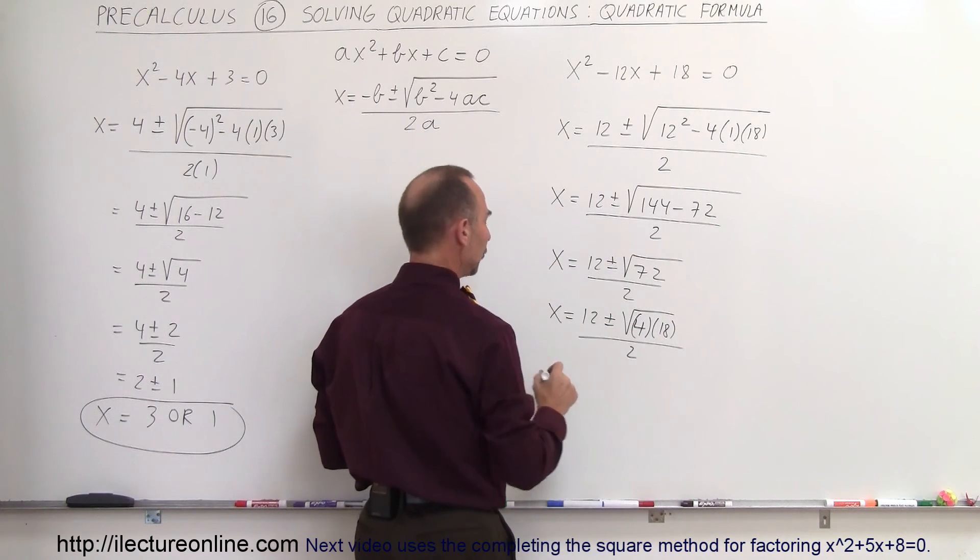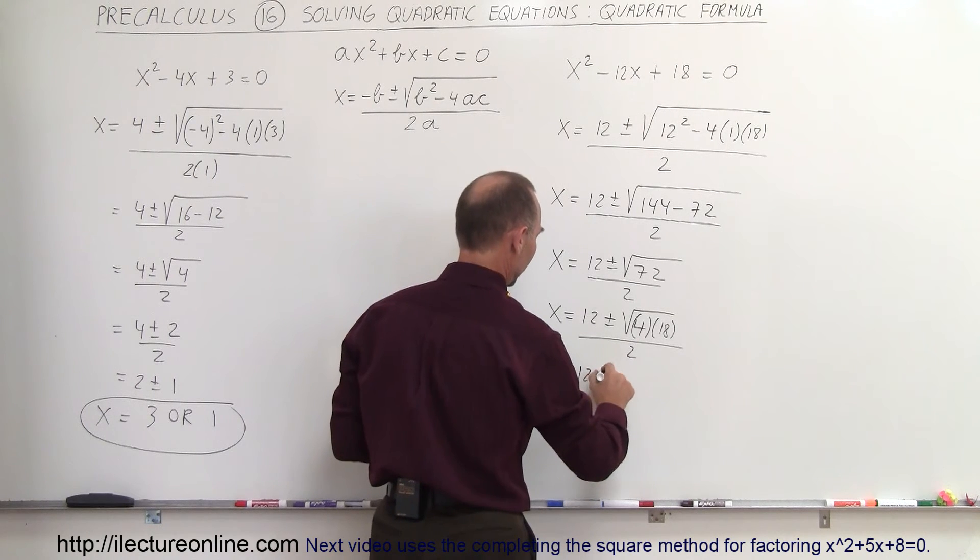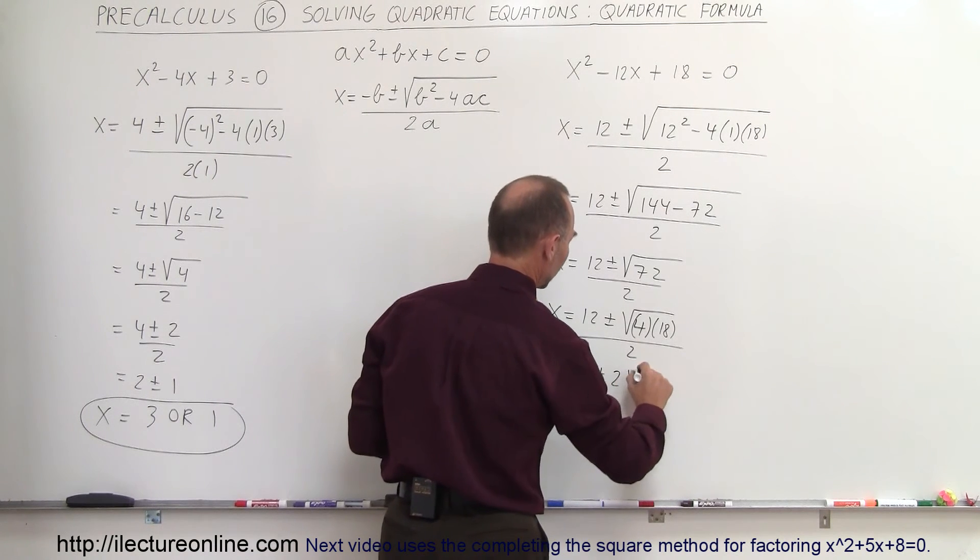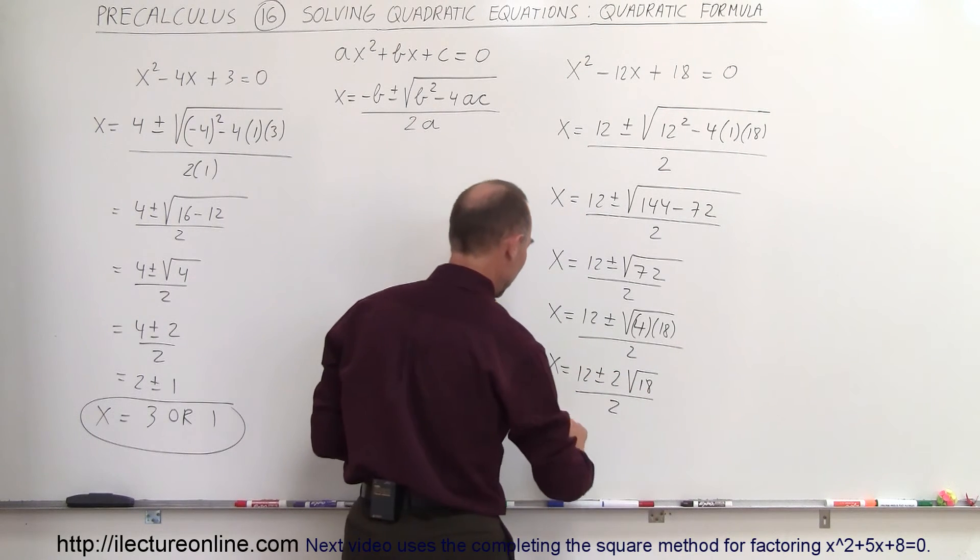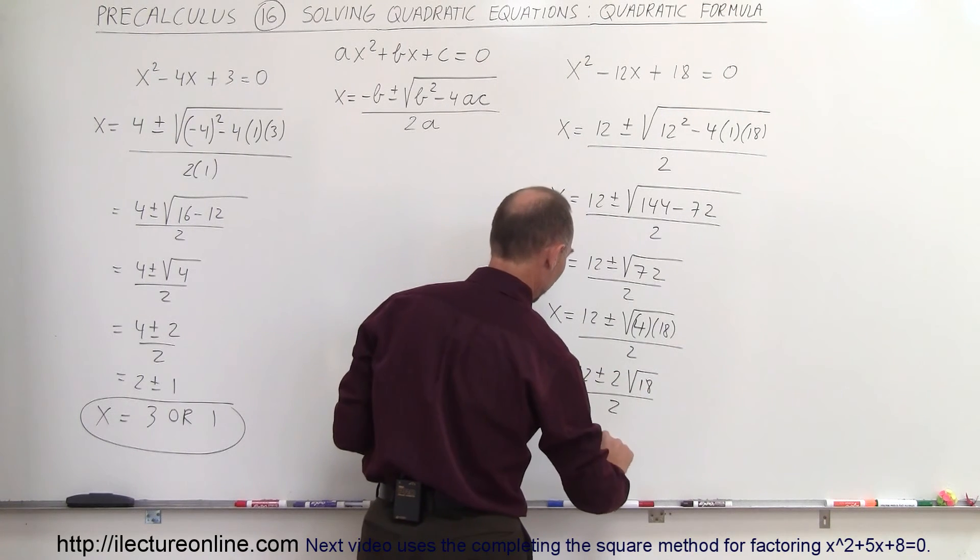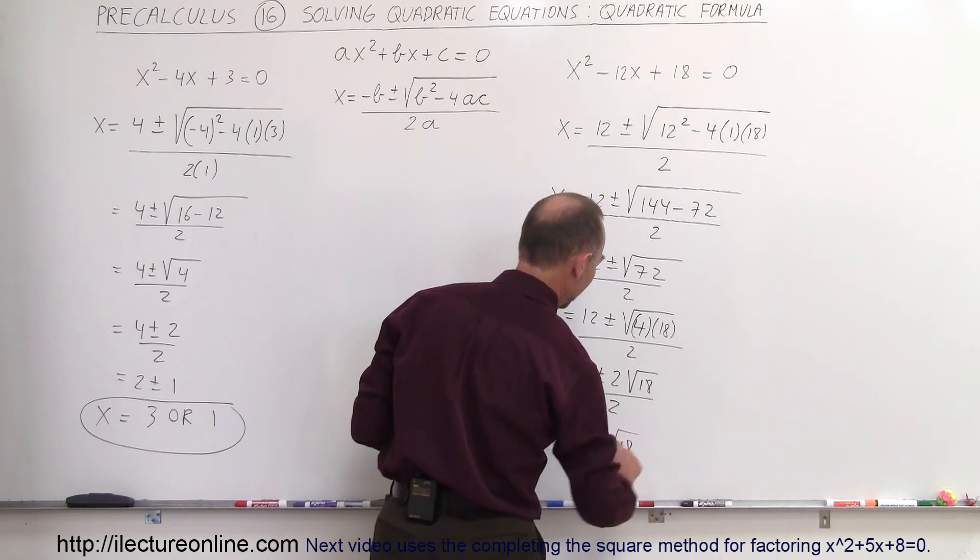So x is equal to 12 plus or minus the square root of 4 times 18 divided by 2. And of course we can take the square root of 4. So x is equal to 12 plus or minus 2 times the square root of 18 divided by 2. Divide 2 in that.